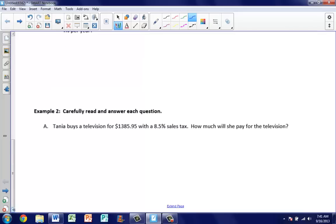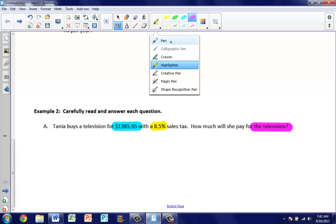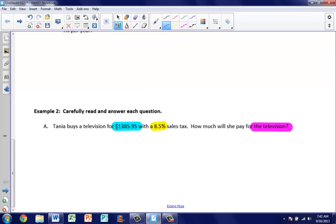Let's take a look at example two. Now for example two, we are dealing with sales tax. Tanya buys a television for $1,385.95. I'm going to circle that because that's going to be important. We have an 8.5% sales tax. The question is asking how much will she pay for the television? Let's go ahead and start off. We need to find out how much sales tax Tanya is paying for this television.